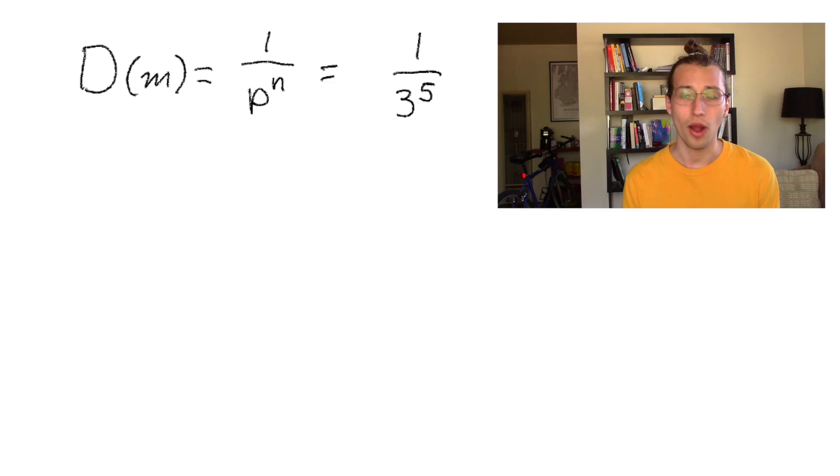This sounds really random, doesn't it? Completely arbitrary. Where would we get such a strange notion of size? In my last video, I made a comment that in a 2-adic system, 4 was farther away from 5 than it was from 8. And now we can actually see why that is.